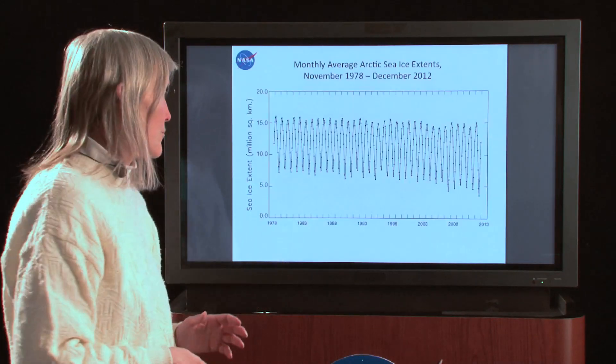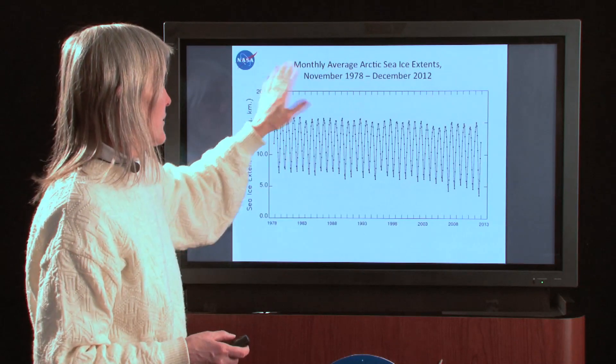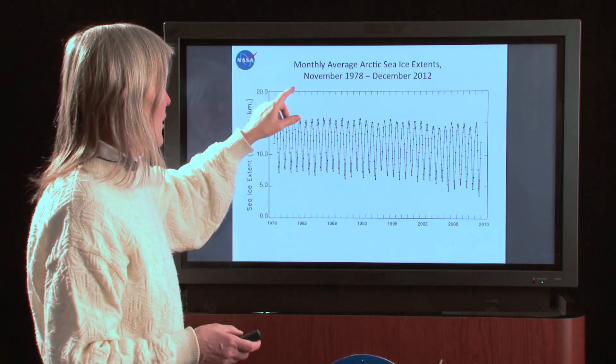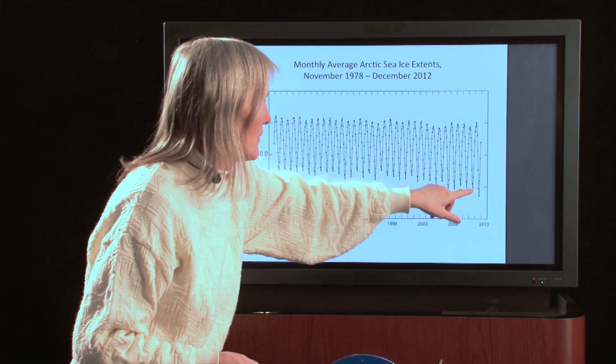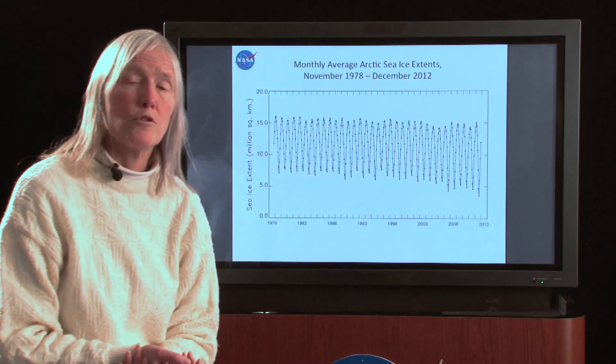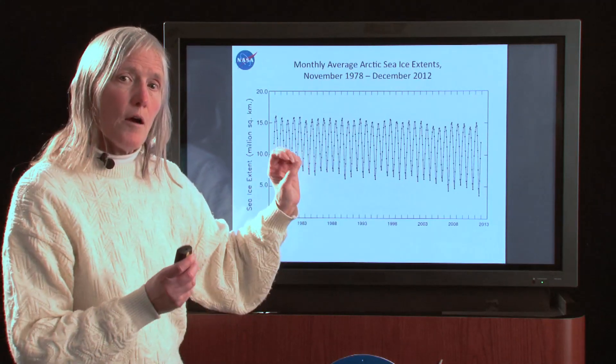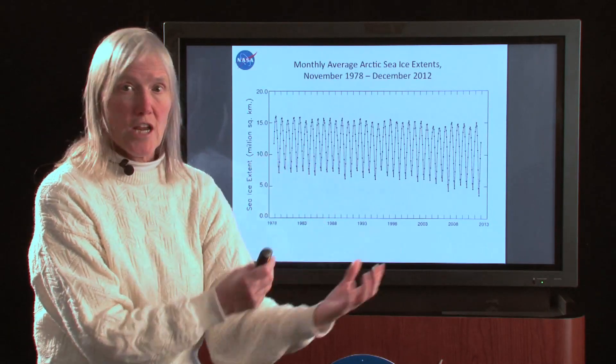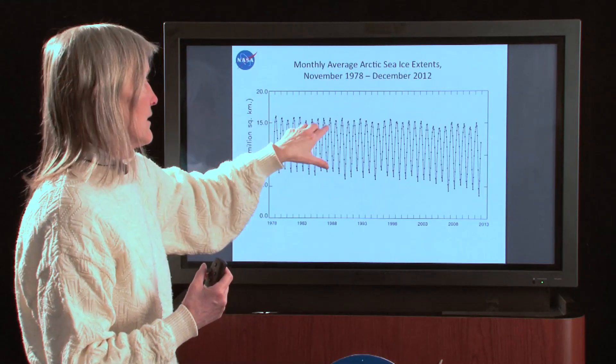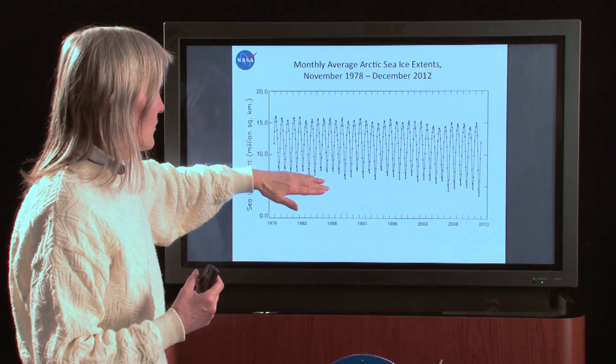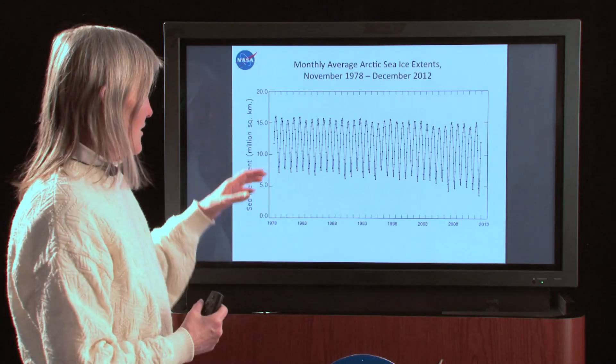In the first of the three videos, we came up with this plot of monthly average Arctic sea ice extents over the period of our satellite record, starting with November of 1978 and going through the end of December of 2012. This is a great plot, it's very helpful for a lot of things, but it doesn't tell us what's the change in the Arctic sea ice over this record. The confusing factor was the seasonal cycle, way more ice in the winter than in the summer, obscured the number of what's the change in the Arctic sea ice.